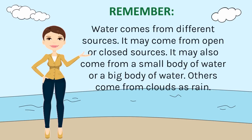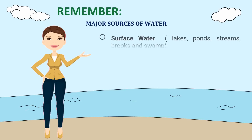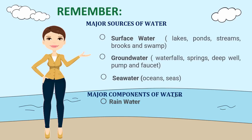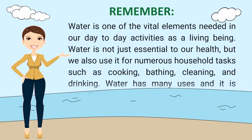Remember: Water comes from different sources. It may come from open or closed sources, or from a small or big body of water. Others come from clouds as rain. The major sources of water are surface water — like lakes, ponds, streams, brooks, and swamps — groundwater such as waterfalls, springs, deep wells, pumps, and faucets, and seawater such as oceans and seas. The major component of water is rainwater. Water is one of the vital elements needed in our day-to-day activities. It is not just essential to our health, but we also use it for household tasks such as cooking, bathing, cleaning, and drinking. Water has many uses and it is everything.